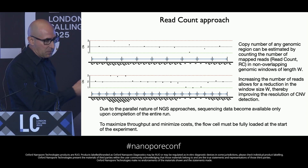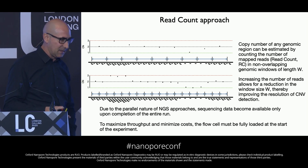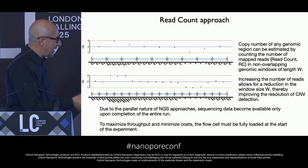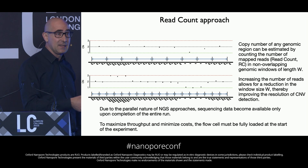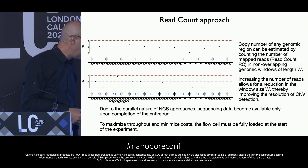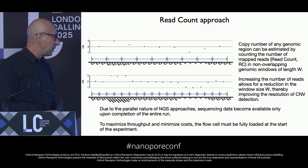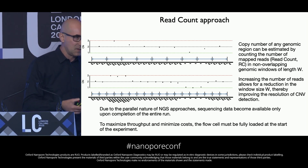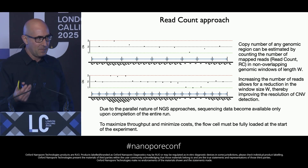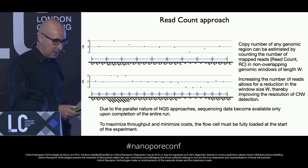This read-count approach has been widely used with sequencing-by-synthesis data. However, due to the parallel nature of NGS approaches, sequencing data can only be used at the end of the sequencing run. To maximize throughput and minimize costs, the flow cells of Illumina platforms must be fully loaded at the beginning of the experiment.